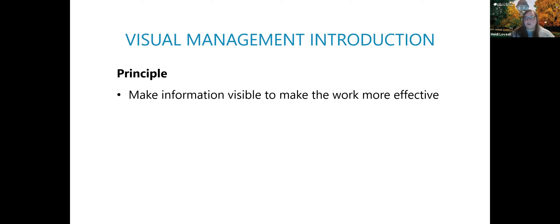What that helped me understand is that visual management is more of a principle than a tool. And the principle is very simple: make information visible to make the work more effective. It's a little different than other lean tools where you could go to the internet and find an A3 template or a four-box problem solving checklist. You can't just pick up a tool and copy and paste it into your workplace. It's a principle — it's how we approach the work. So if visual management sounds overwhelming, remember it is very simple: make information visible to make the work more effective.